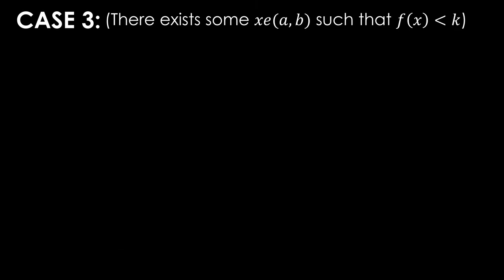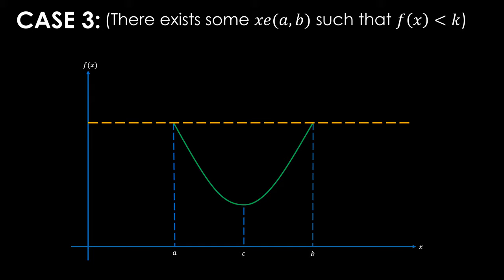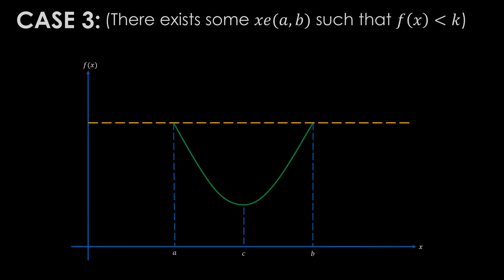In case three, we deal with a function that has a local minimum instead of a local maximum, like in case two. If you wanted to be very careful, you could do a proof for case three. However, it is virtually analogous to case two, except for the fact that we have a minimum instead of a maximum. So normally you may end your proof here, describing the fact that case three is virtually analogous to case two. And therefore, since we have covered our three cases required for our proof, we have proved Rolle's theorem.